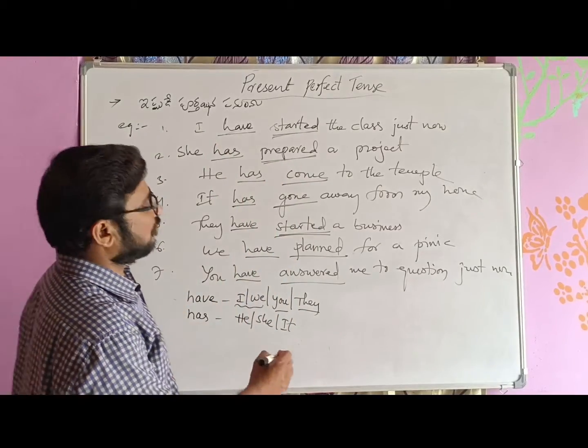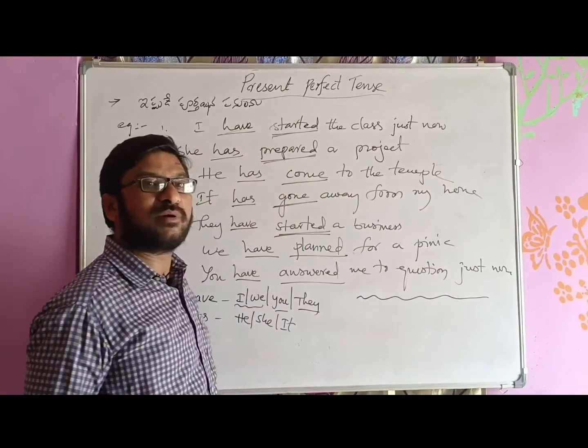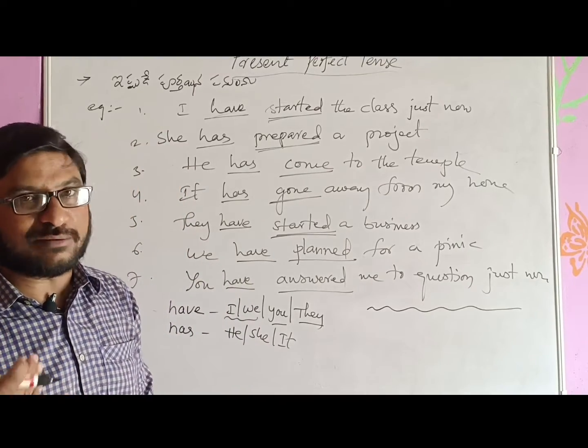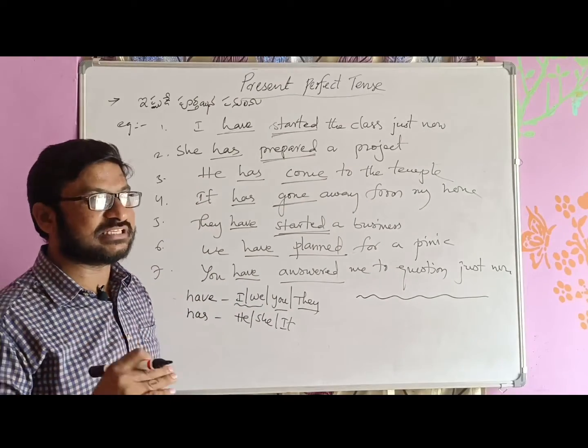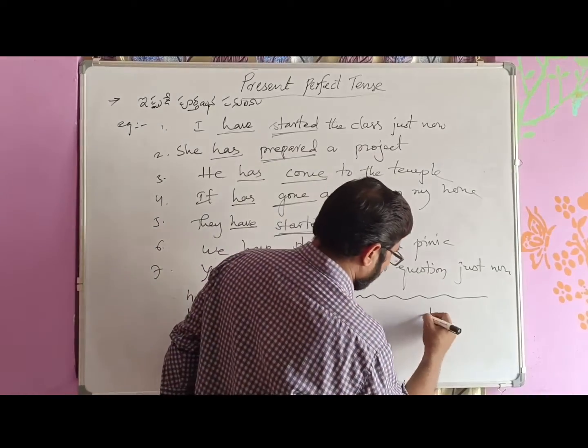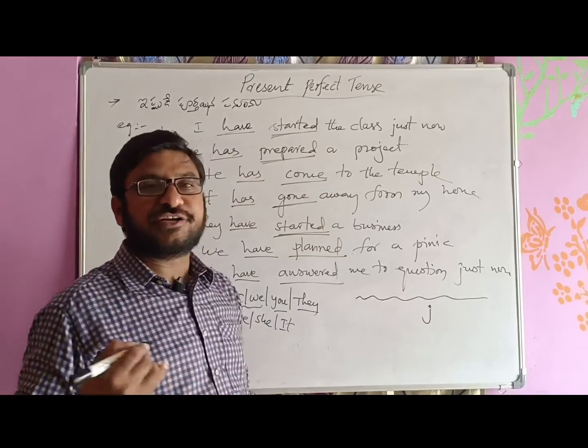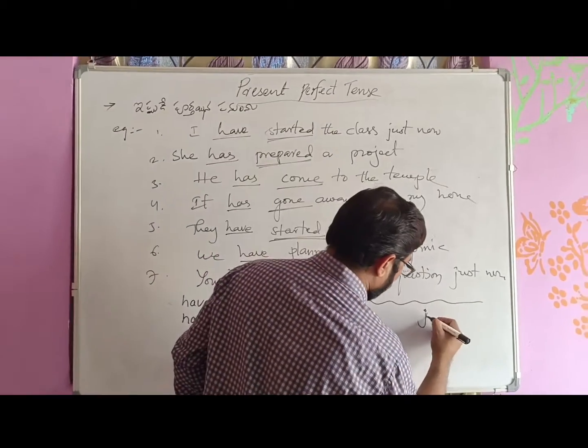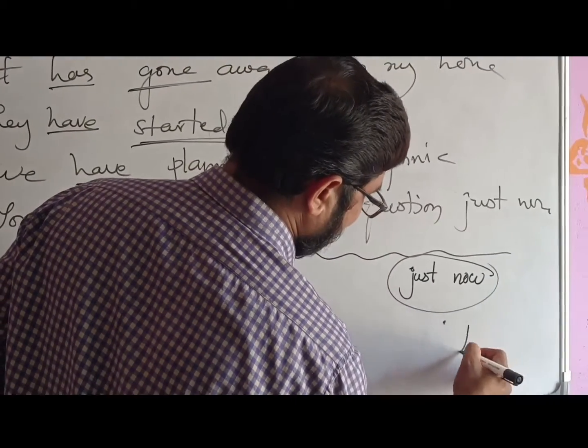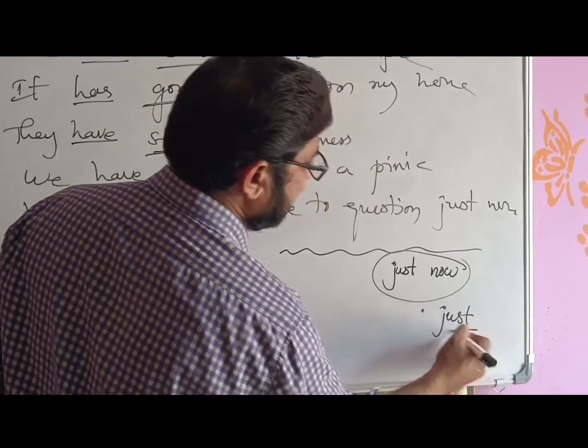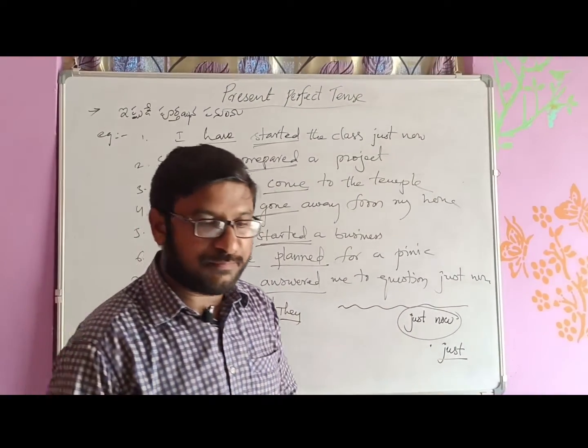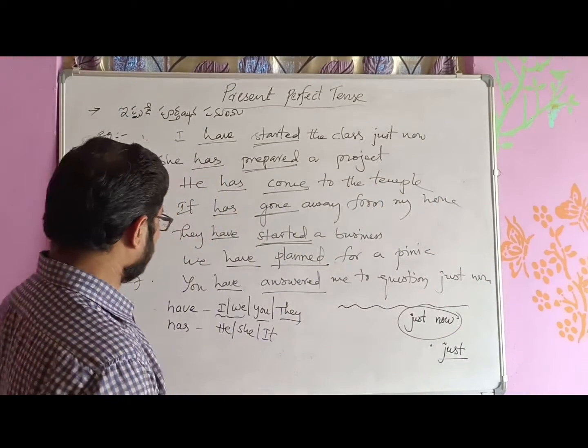When we frame sentences, there is a clue word. When a question is given, how do we identify that it is in Present Perfect Tense and how do we modify the verb? The major clue word in Present Perfect Tense is 'just now'. When you see 'just now' or just 'now', we can identify it as Present Perfect Tense.